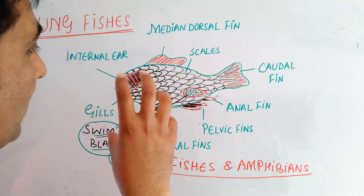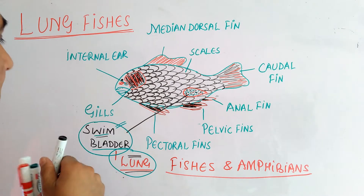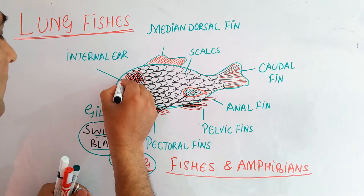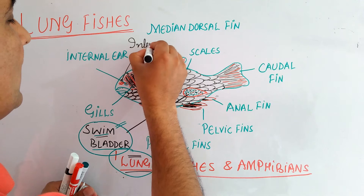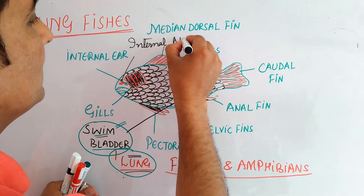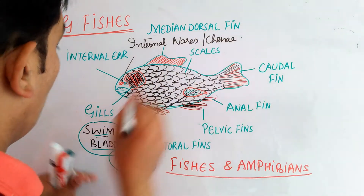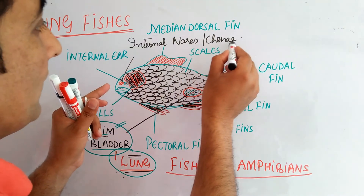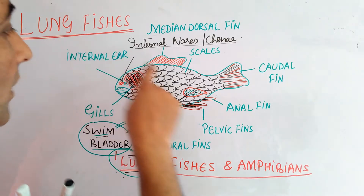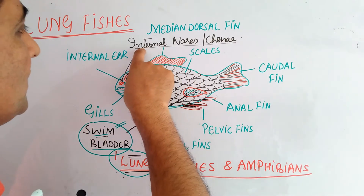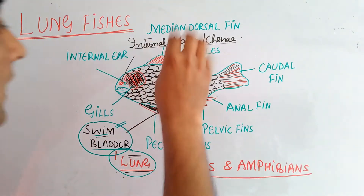There are some other differences. There is the presence of internal nares, also known as choanae (C-H-O-A-N-A). These internal nares or choanae are a feature that differs lungfishes from the general bony fishes. This feature — the presence of internal choanae or internal nares — resembles that of the amphibians.